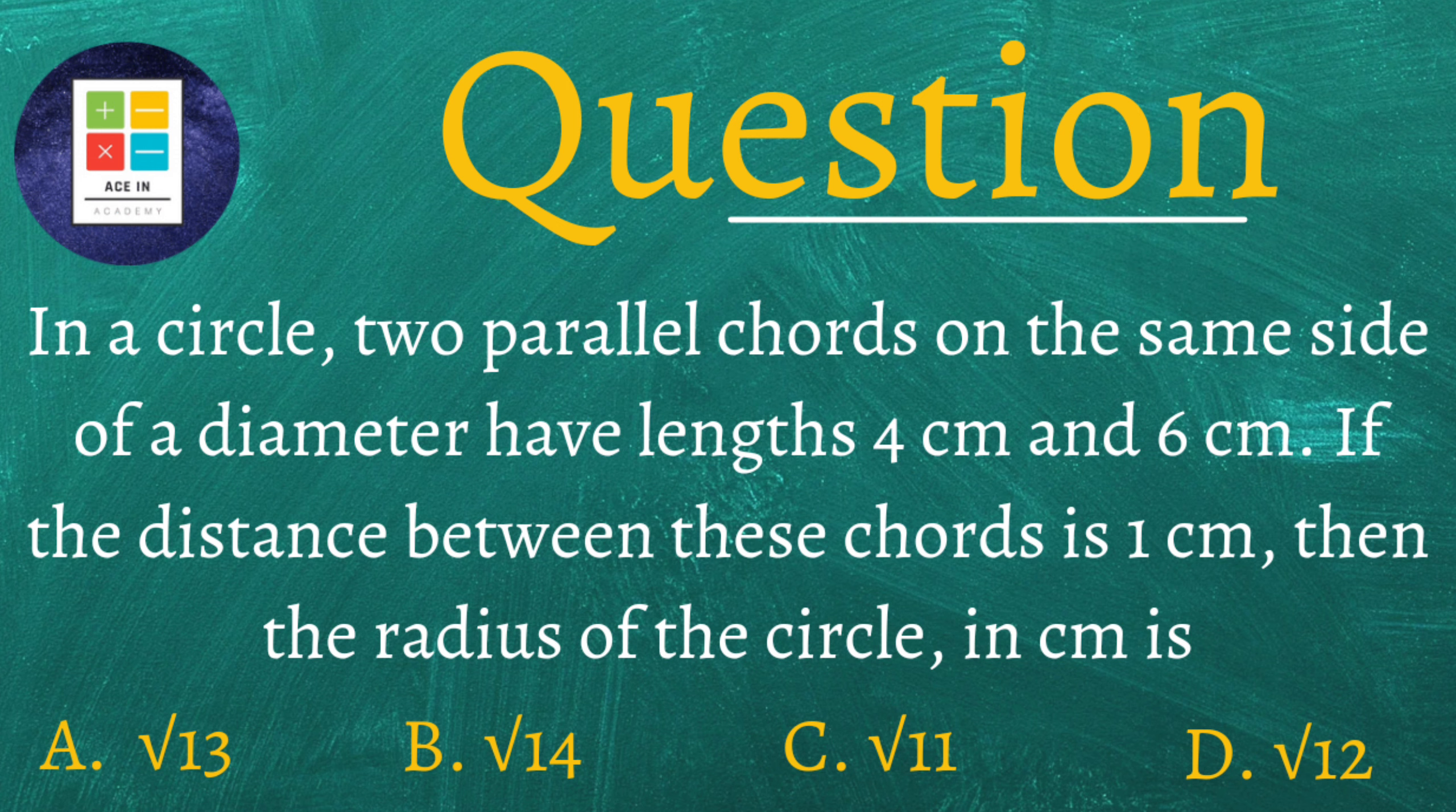In a circle, two parallel chords on the same side of diameter have lengths 4 cm and 6 cm. If the distance between these chords is 1 cm, then the radius of the circle in centimeter is.